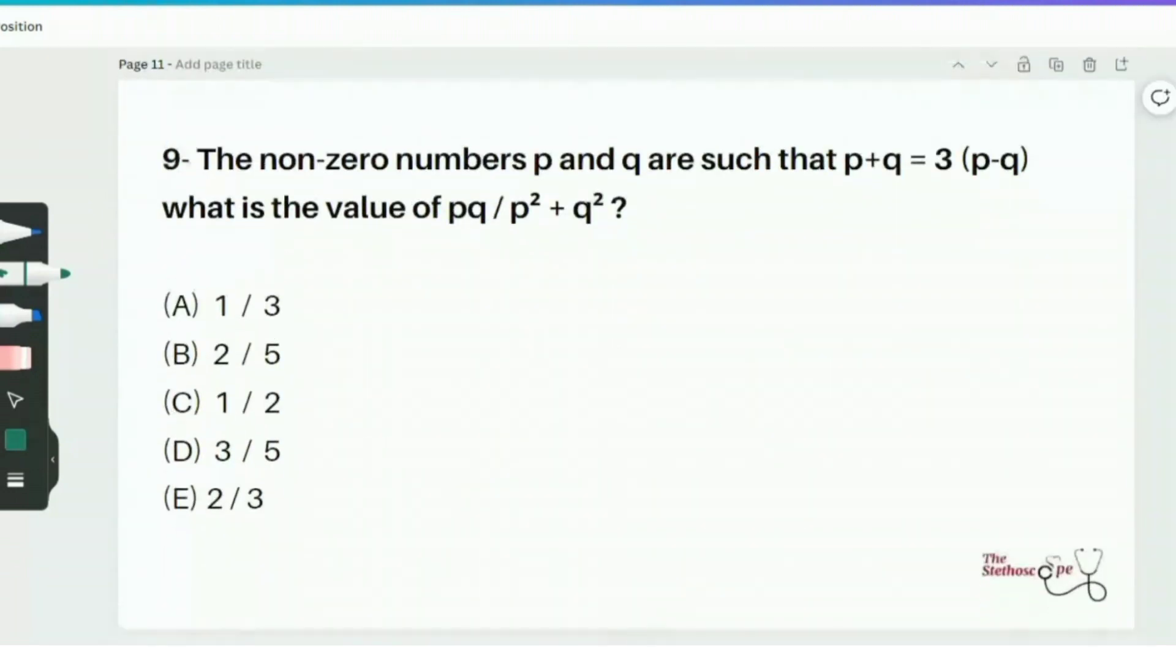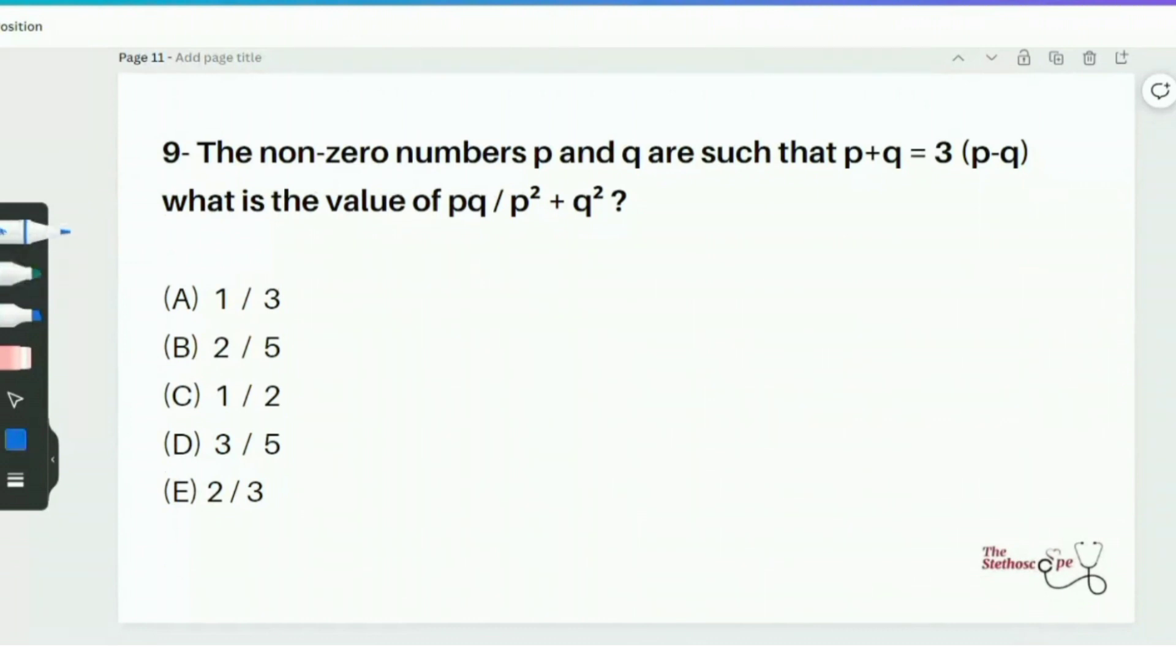Moving towards the next question, question number 9. This question says that the non-zero numbers p and q are such that p plus q equals 3 times p minus q. What is the value of pq over p square plus q square? The first thing we are going to do is simplify this equation. So we can just say that p plus q equals 3 times p minus q. And this can be written as p plus q equals 3p minus 3q. And if we rearrange this, we get 4q equals 2p. So both sides then can be divided by 2, we are going to get 2q equals p.